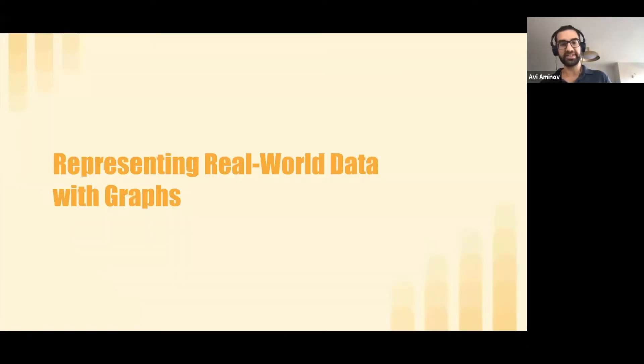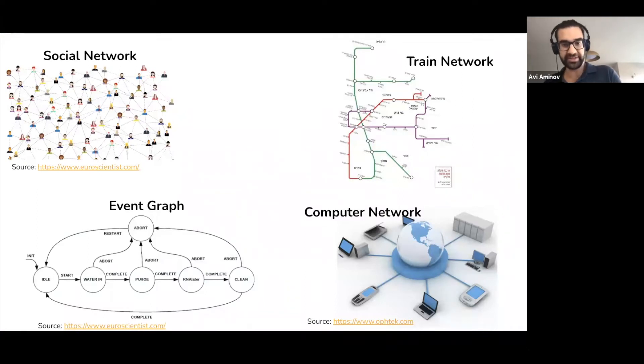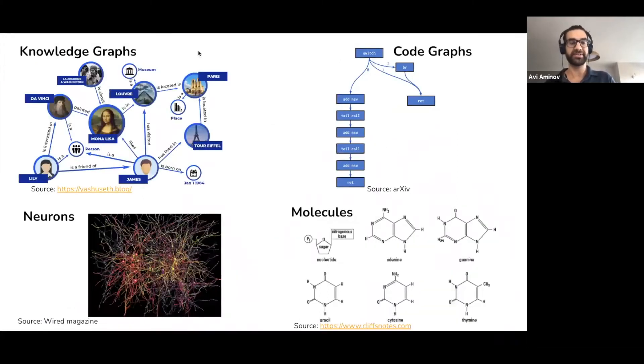Just a few examples of how real-world data is represented naturally as graph. So we all know the social networks. It's a very heavy topic, heavily researched, heavily used by most of us. And naturally, there are other networks that we know from life, computer networks, train networks. All of them are networks. You have stations connected. Knowledge graphs are a certain type of graph where we use to represent our knowledge of the world in a structured way. And even code and molecules can represent it as graphs of various sizes.